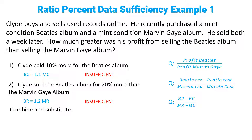So let's combine and substitute and see if we can get all the variables to cancel off. BR minus BC over MR minus MC — we can substitute in 1.2 MR minus 1.1 MC on the top, and the bottom says MR minus MC. No, there's nothing we can do with that. We are not allowed to cross off the MR and the MCs from the top and the bottom. That is insufficient — that is answer choice E.